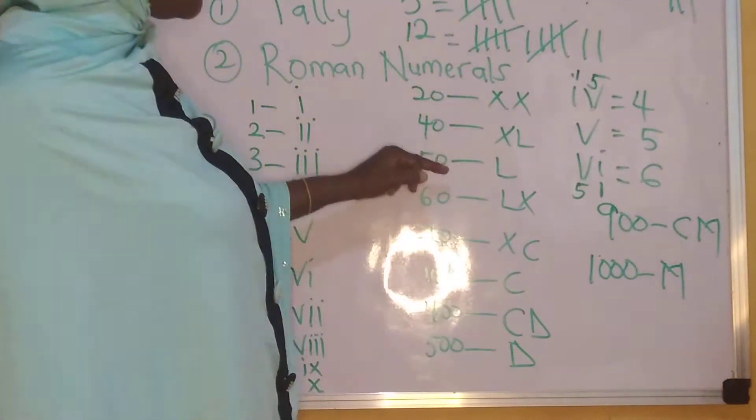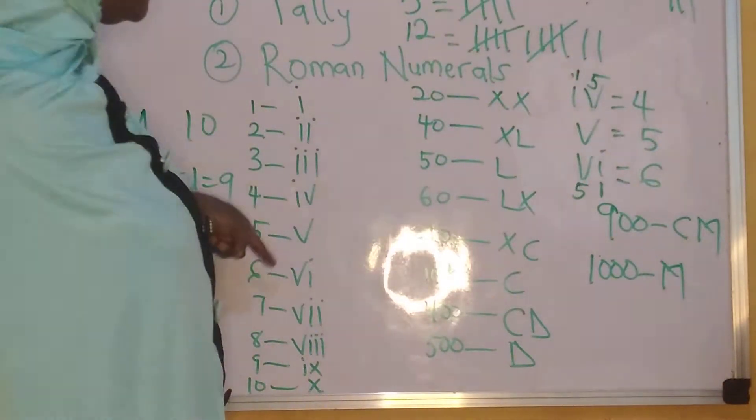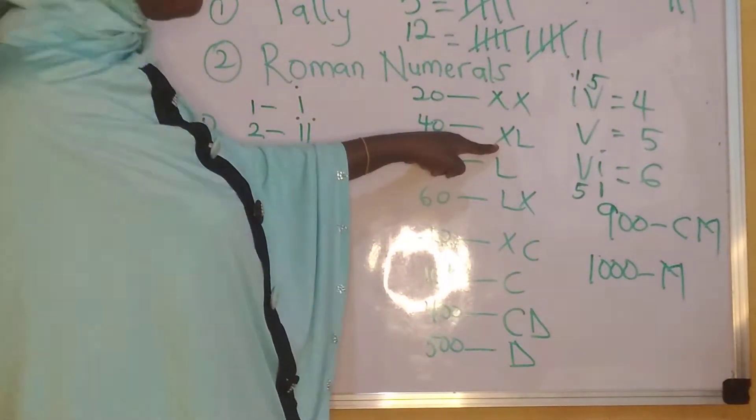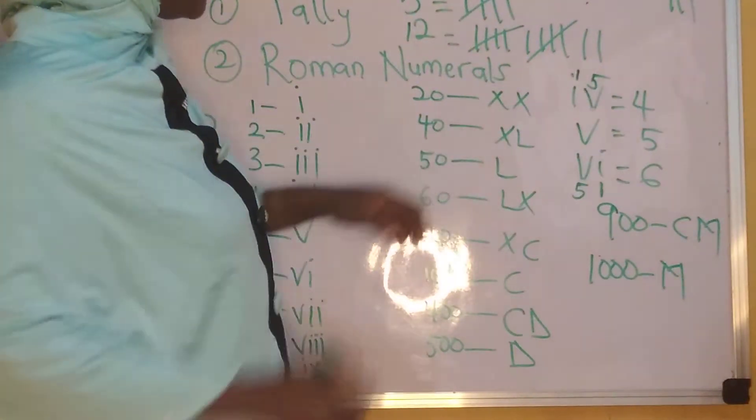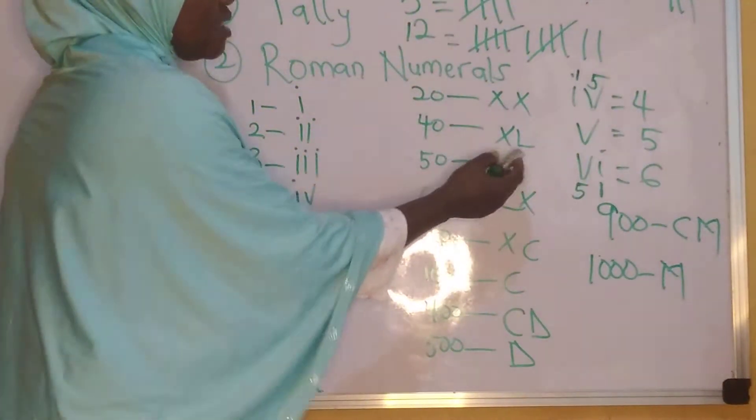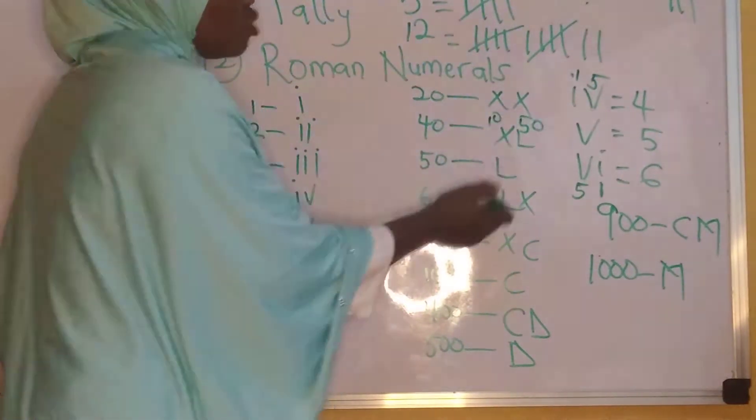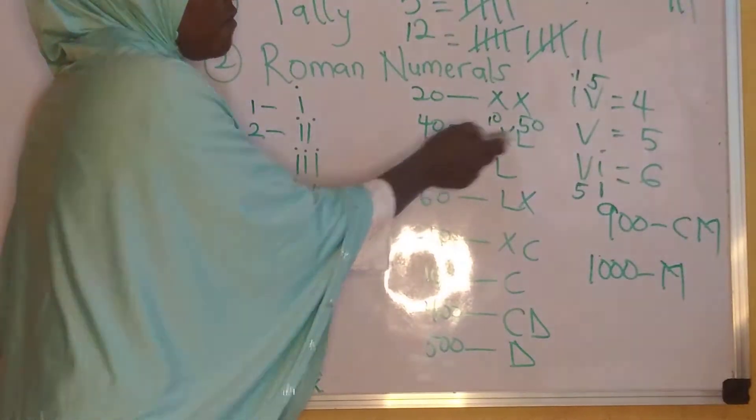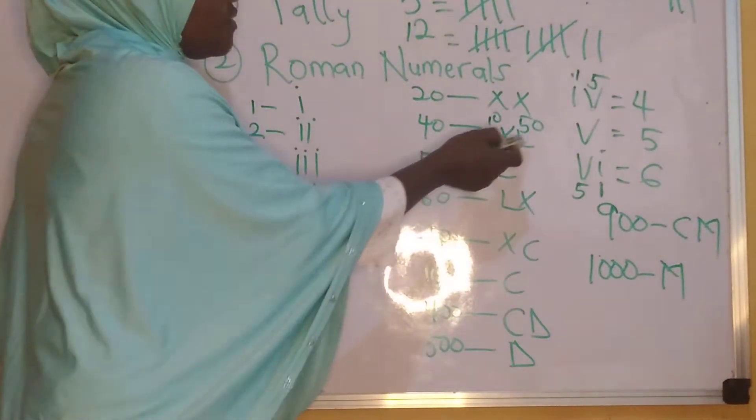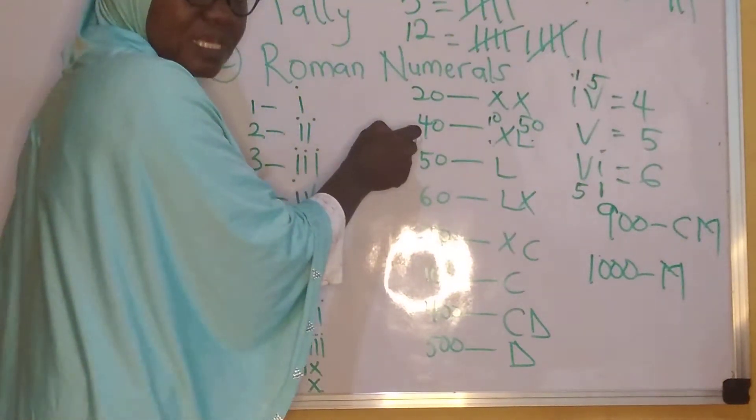Why is my 40 XL? My 40 is XL because I told you that anytime you have a smaller number written first and a bigger number written later, that means you have to subtract. So this is my 40 that is XL. It means my X is 10. My L is 50. So because X, which is a smaller number than 50, is written before 50, you just say 50 minus 10. And that is why we have our 40 to be XL.